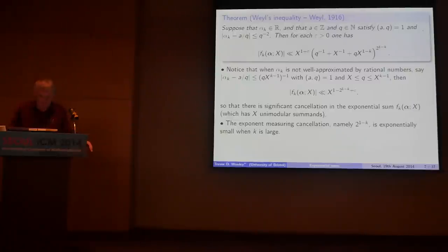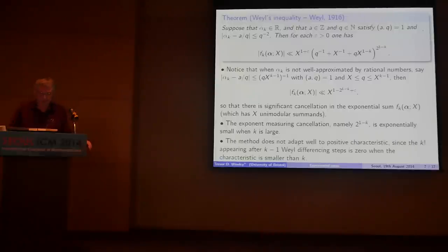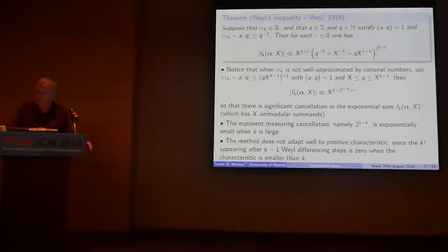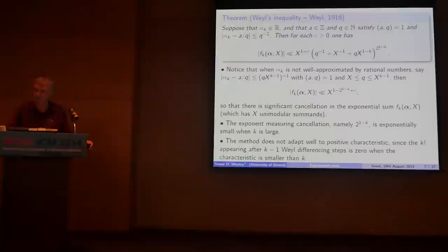This is a pretty robust method for deriving estimates for exponential sums when the lead coefficient is not well approximated by rationals with small denominator. The improvement over the trivial estimate is small but positive. One other feature: if you're interested in applications in theoretical computer science, for example when working with polynomial rings with coefficients from a finite field F_q, this method doesn't give sensible estimates when the characteristic is small. So that's another problem with Weyl's method.